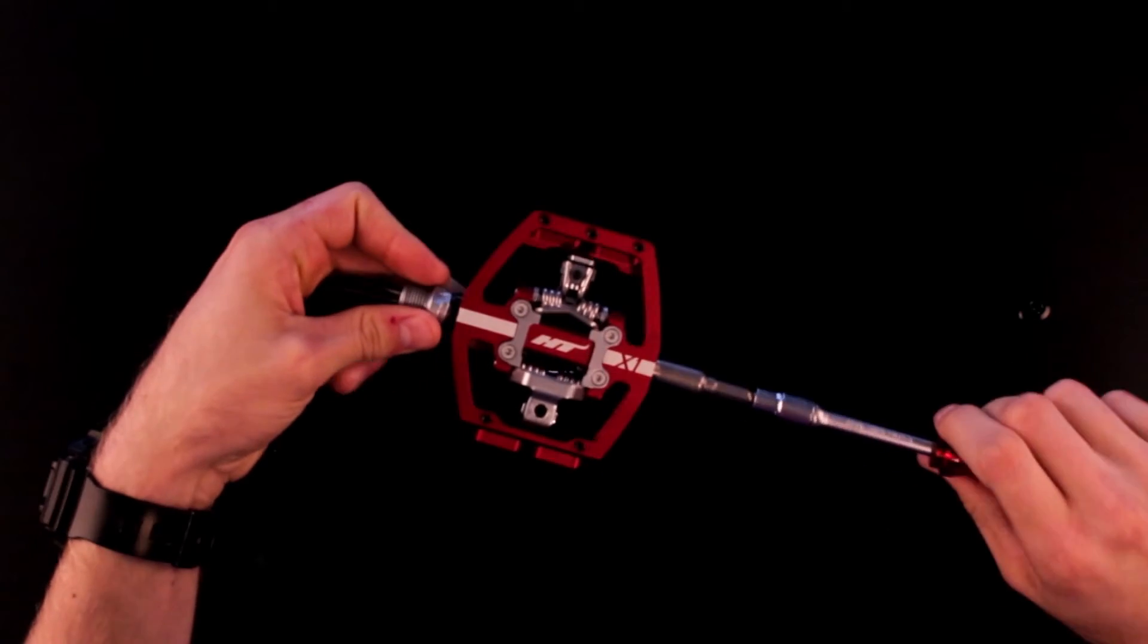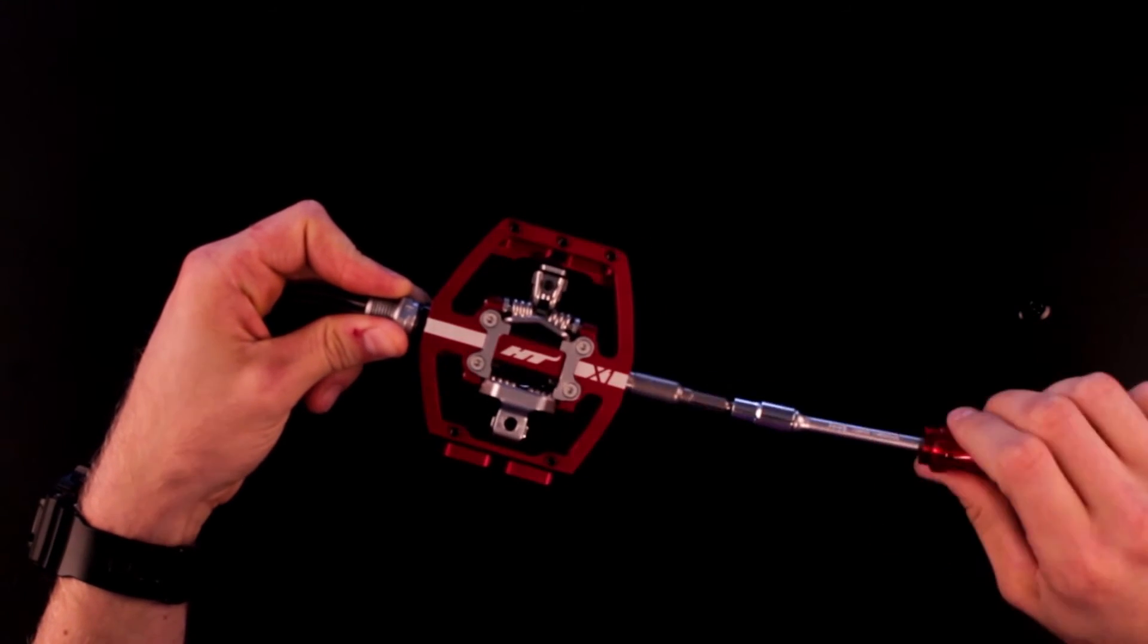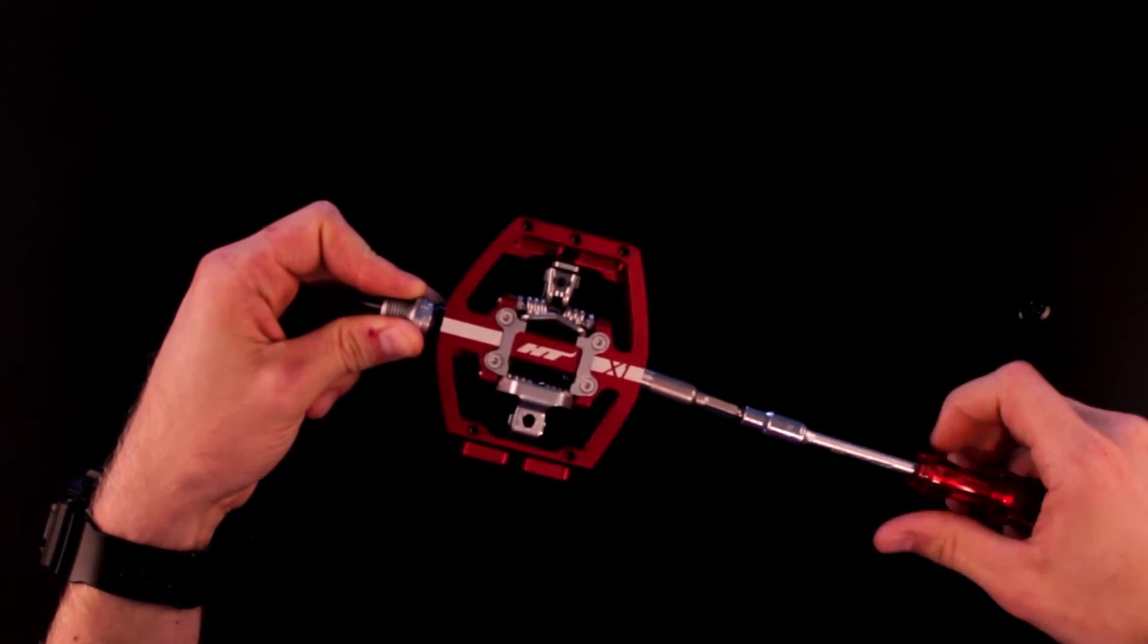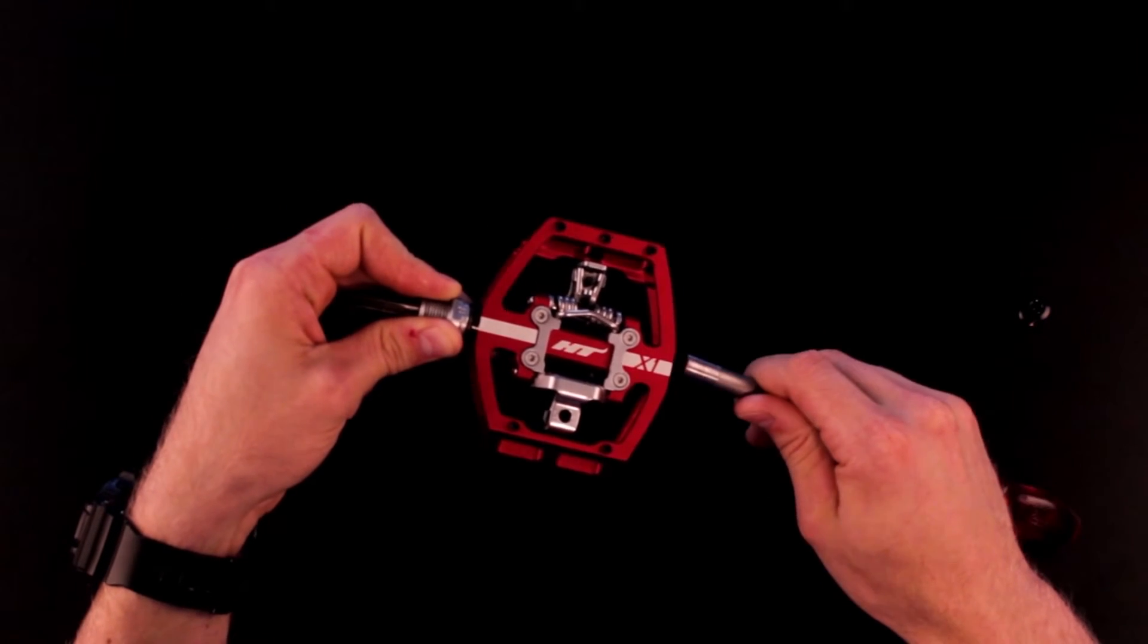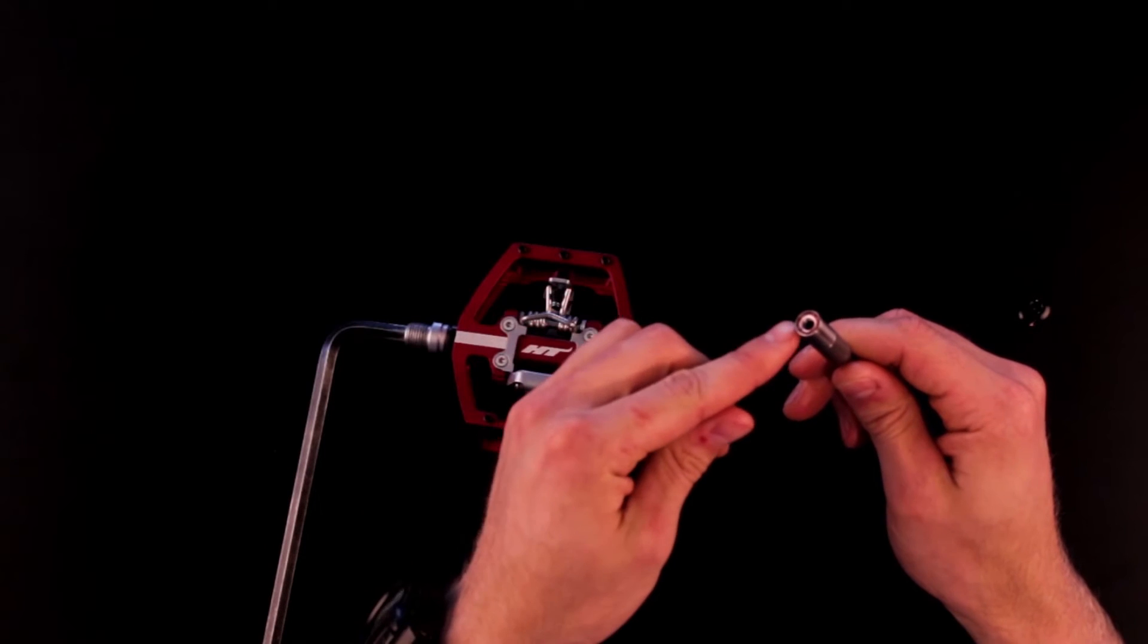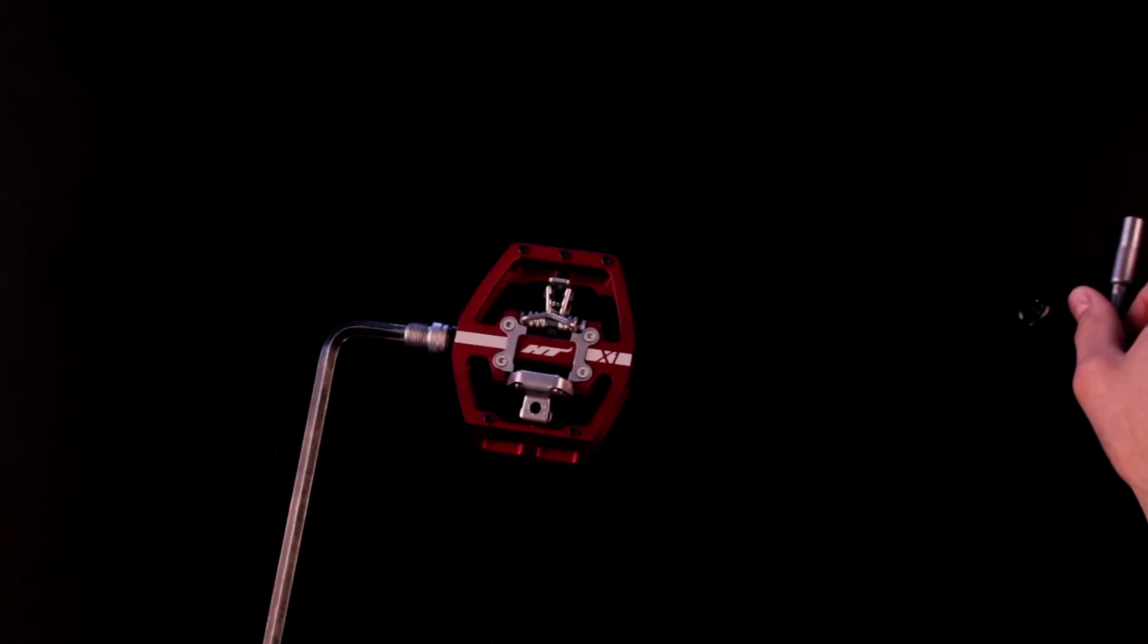For the right hand pedal you'll need to turn it clockwise and for the left hand pedal anti-clockwise. Now you can see the nut in the socket. Put this to one side to make sure you don't lose it.